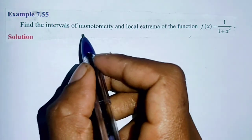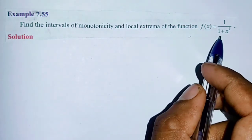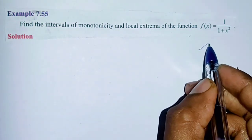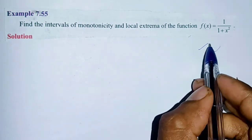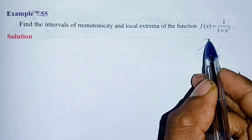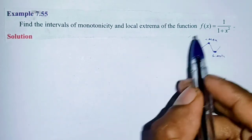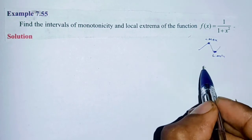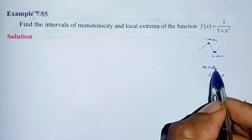Example 7.55: Find the intervals of monotonicity and local extrema of the function f(x) = 1 divided by 1 plus x squared. We need to find local maximum and minimum, so we will use the critical point condition: f dash of x equal to 0.